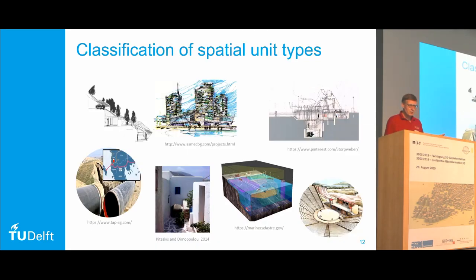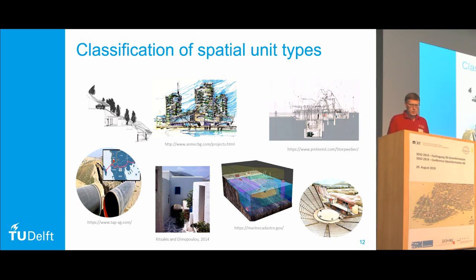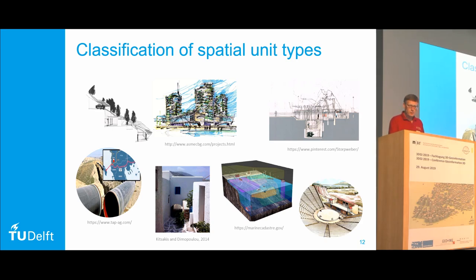Here are some other examples of 3D parcels, often related to constructions, buildings, apartments, or infrastructure — pipelines, networks below or above the surface. Marine environments with the seabed, bodies of water, the surface of water, or even archaeology, which can be above or below the surface. These are examples of possible 3D parcels because there may be restrictions on further development.